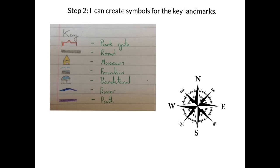Once you've finished step one, and you've labeled your northings and your eastings on your map, step two is I can create symbols for the key landmarks. So here's my initial key before I start to draw my map. Now you remember I took a picture of a park gate, so this is my symbol for a park gate. There are roads nearby, so I've made a symbol for roads. There's a museum, the fountain, the bandstand, the river, and the path.